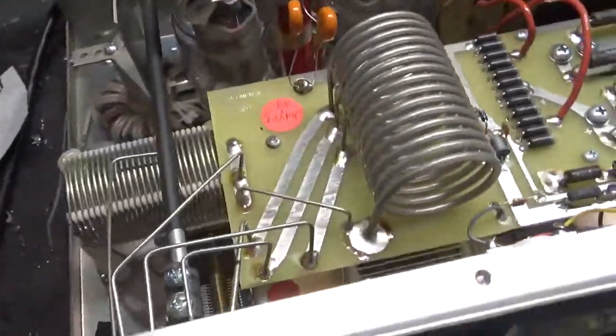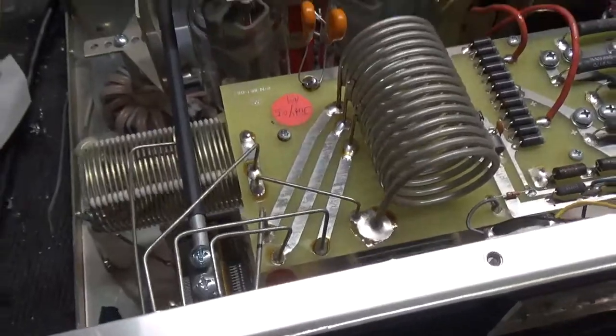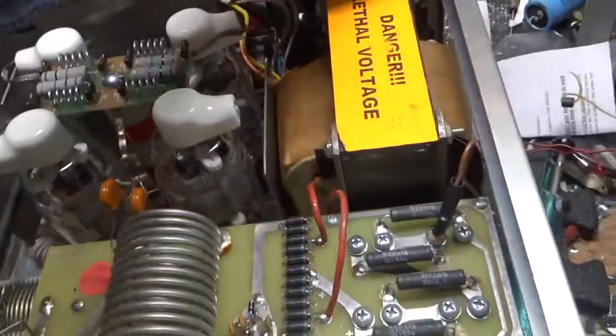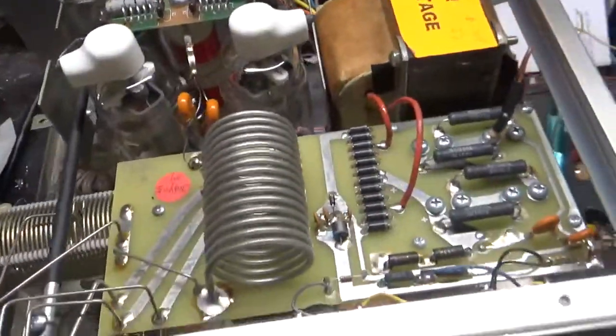Cleaned the input and output rotary switches with deoxy gold, touched up on some solder joints. Replace the fuses with 12 amp fuses since it's wired for 120.